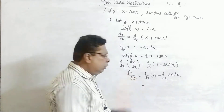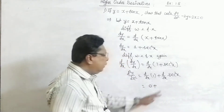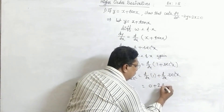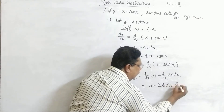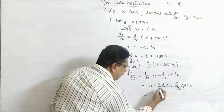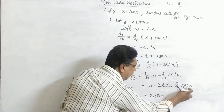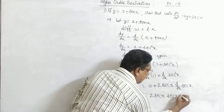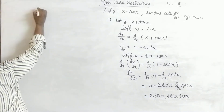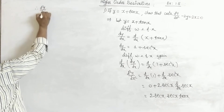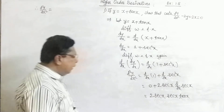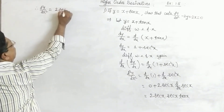Derivative of the constant 1 is 0. Plus derivative of sec²x — using the chain rule, derivative of sec²x is 2·sec(x) into d/dx of sec(x). This can be written as 2·sec(x), and the derivative of sec(x) is sec(x)·tan(x). Therefore d²y/dx² equals 2·sec²x·tan(x).